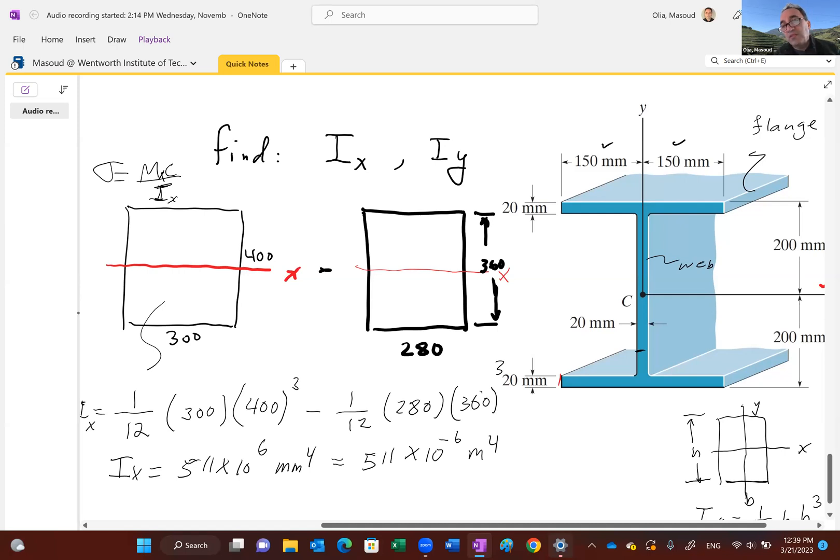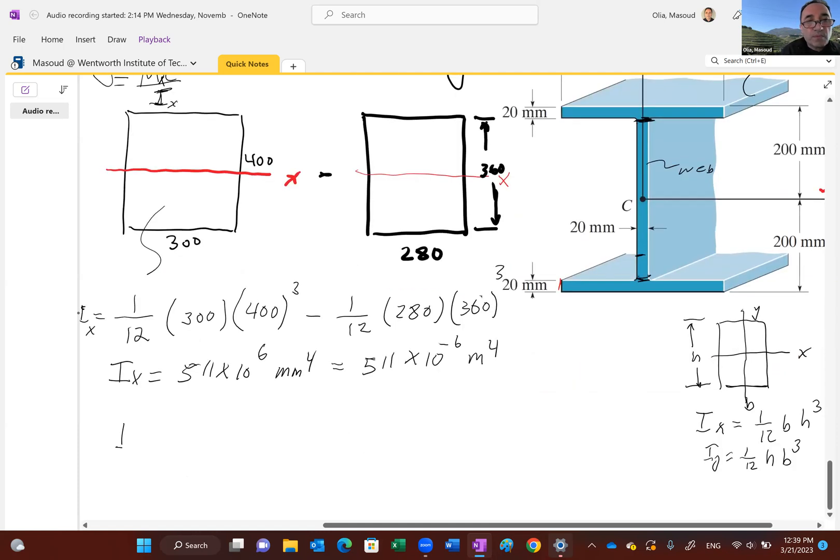All right, look at the web. The web, the y-axis is kind of like the x-axis here, with a b of what? 360 actually, you see that? And the h of what? 20. So you see, for the web itself is 1/12, 360, 20³, right? And then what do you have?